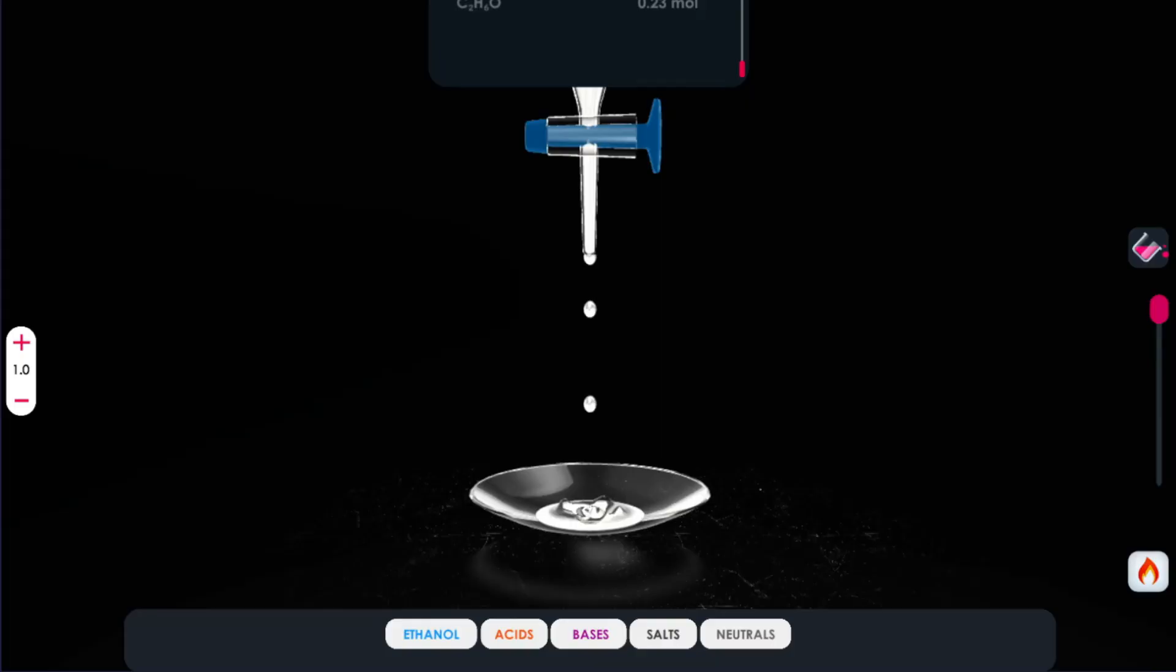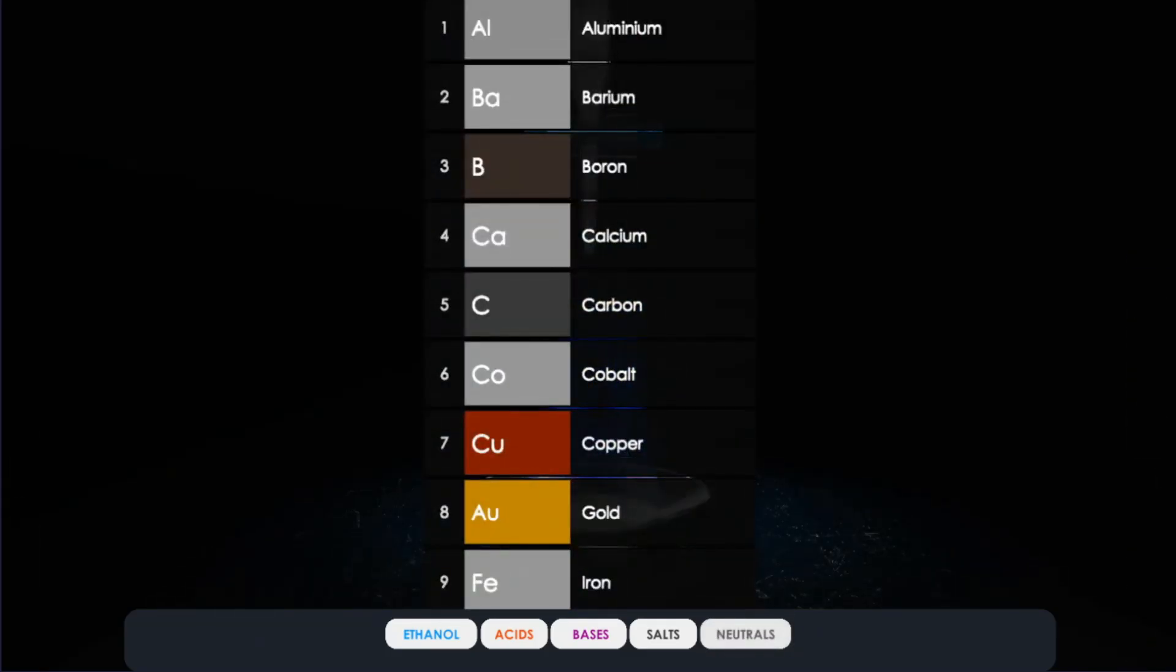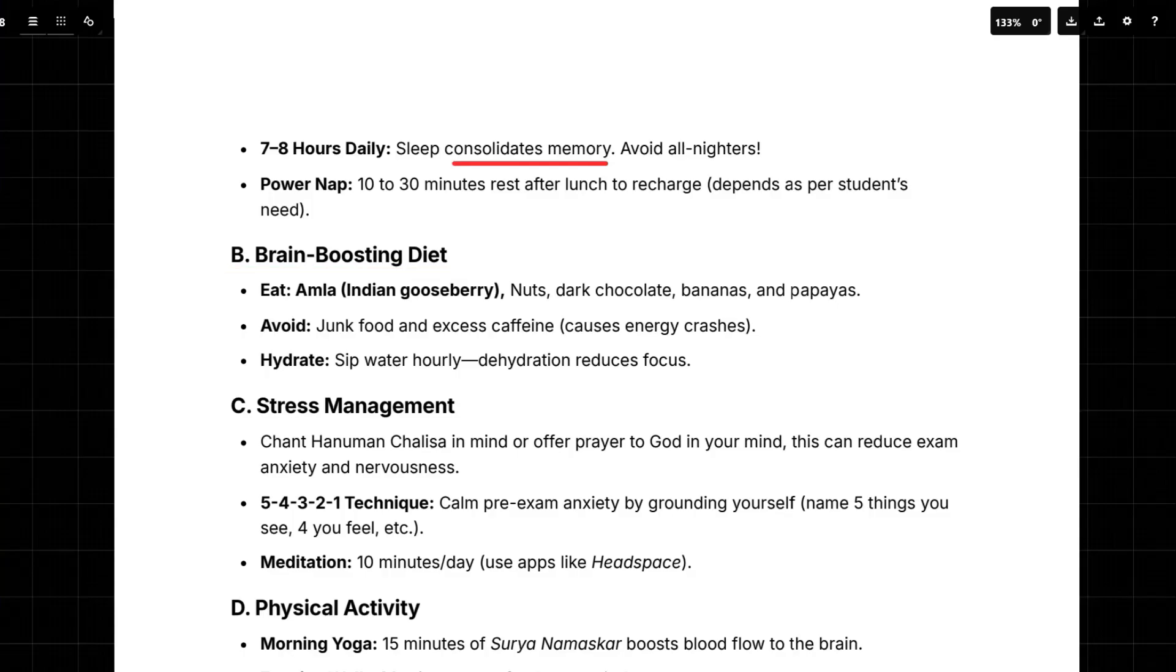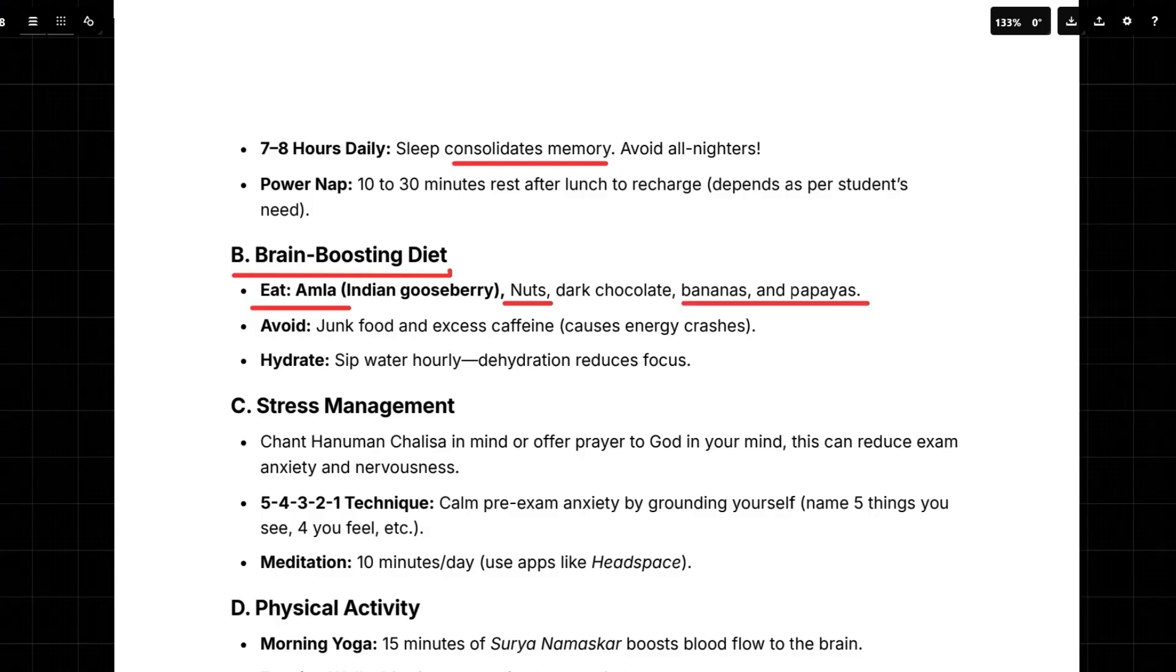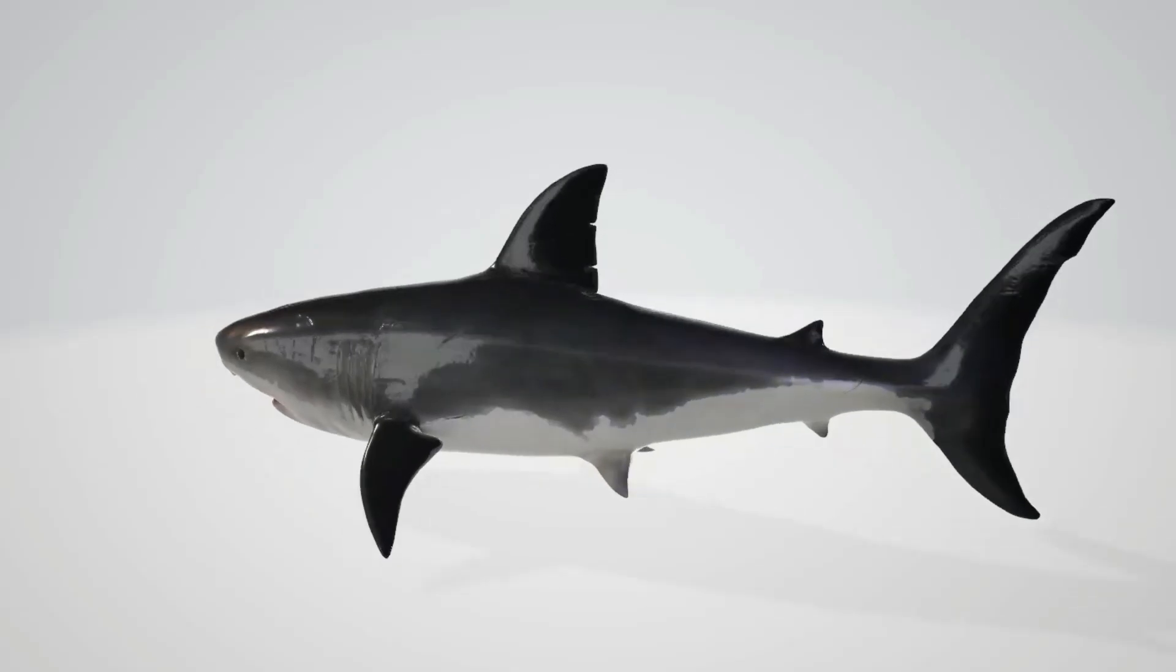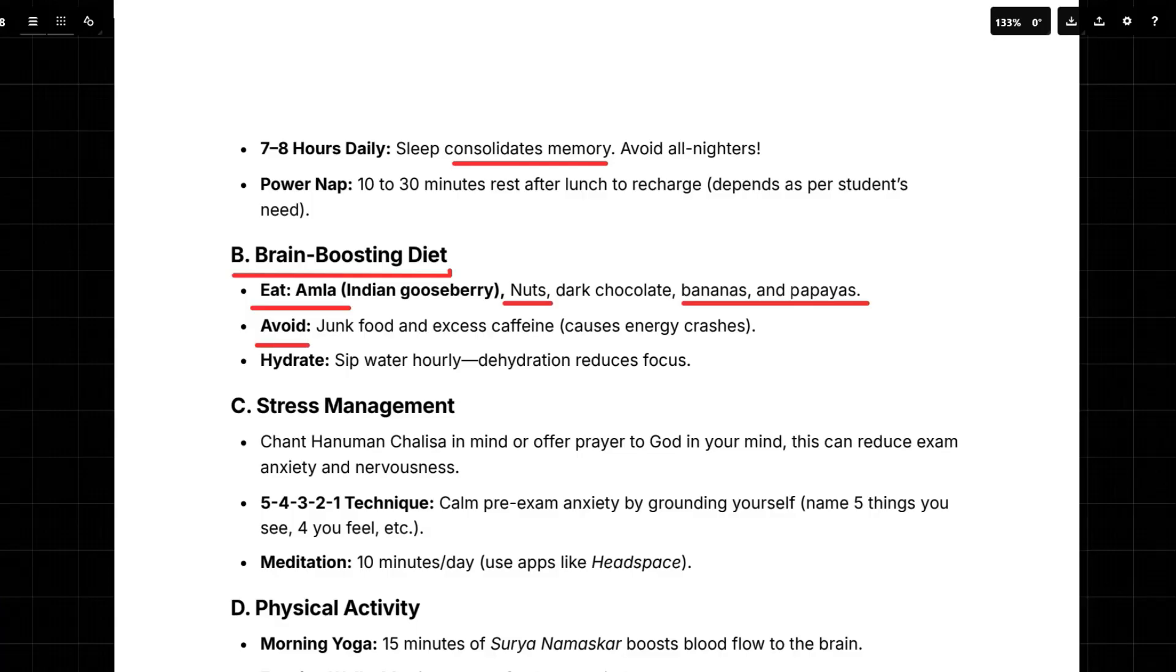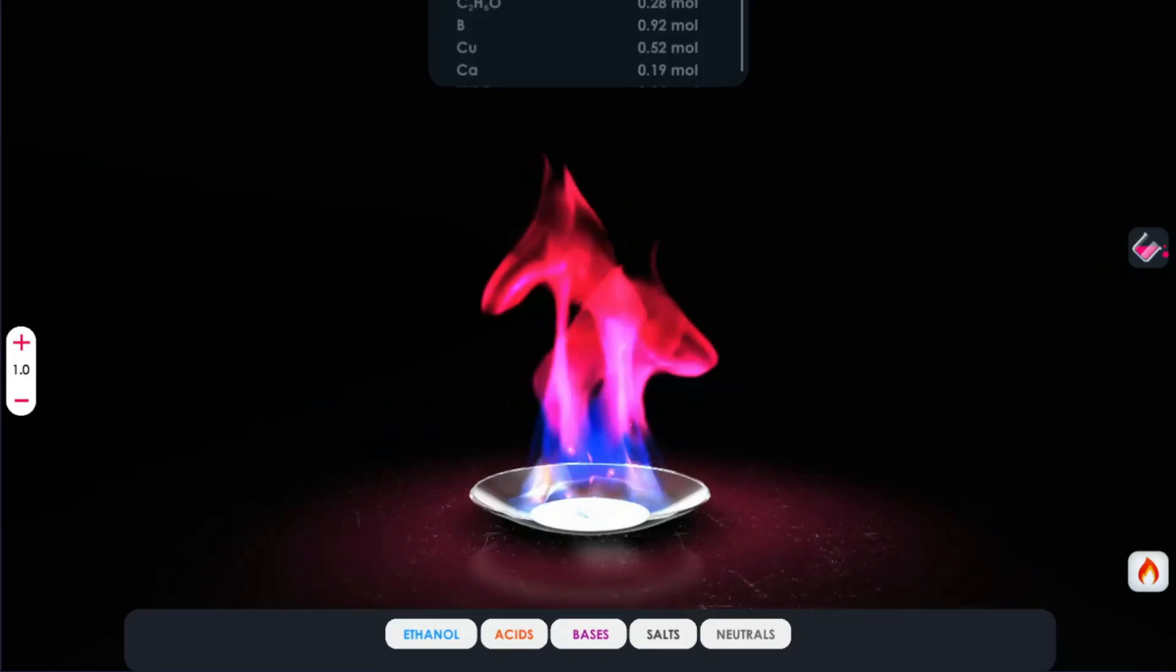What type of food my students should take, and also how they should cope up with the stress, or like they can boost their confidence? So you're asking about what kind of food and how to deal with stress. Diet and mental well-being are so connected, especially during exams. So first, let's talk about the kind of foods your students should be eating. This plan actually recommends some specific foods for brain power, like amla, which is also known as the Indian gooseberry. It's packed with nutrients, which is really good for your overall health. And then there's also nuts, which are great for those healthy fats. And a bit of dark chocolate in moderation can be good too. I'm all in for that. The plan also recommends bananas and papayas for sustained energy. So it's about picking foods that provide a steady supply of fuel, not those quick sugar highs. Exactly. And it also tells us what to avoid. Right. You want to stay away from junk food and excessive caffeine. Those things will lead to energy crashes, which can be really harmful. And it's also really important to stay hydrated, so sip water hourly. Even mild dehydration can hurt your focus.